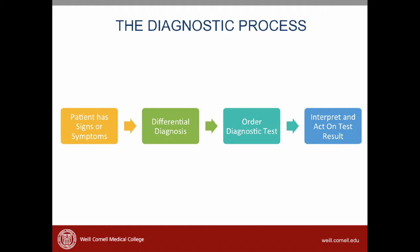Diagnosis is a determination of which disease or condition is causing a patient's signs or symptoms. The diagnostic process is complex and usually follows a series of steps. First, a patient presents with signs or symptoms. Then, the doctor makes a differential diagnosis of the most likely possibilities. For one or more of those disease conditions, she will probably think the diagnosis is very likely, and so she may order a diagnostic test. Finally, the doctor has to interpret the results of the test and act on those test results. We're going to focus on the quality of that diagnostic test and how it helps us make decisions about whether a patient has a disease or condition.